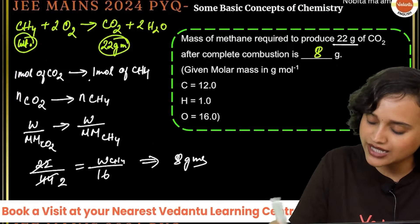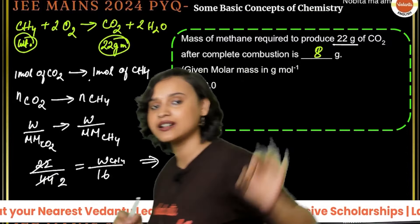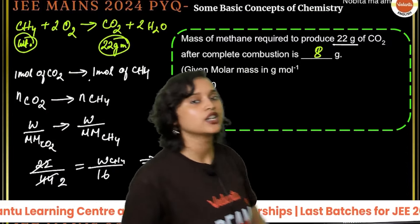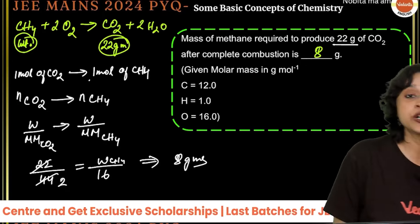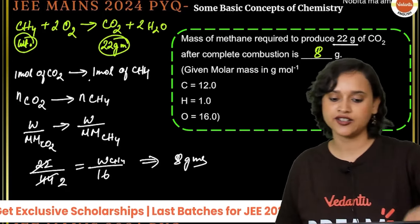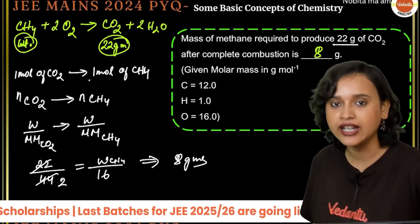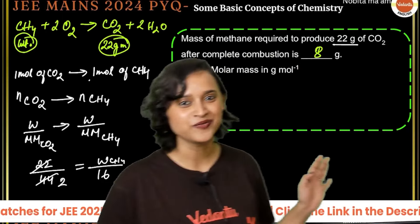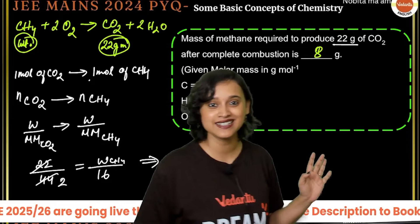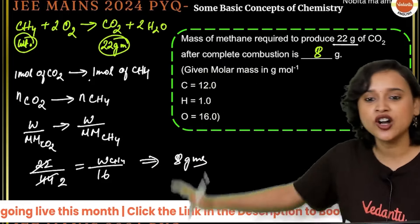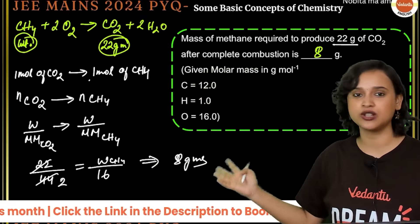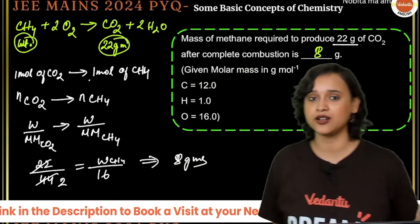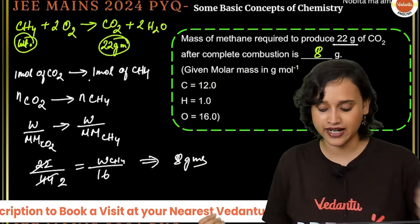8 grams is your answer. After complete combustion, you require 8 grams of CH₄ to produce 22 grams of CO₂. Again, a very easy question — you don't even require a calculator to solve this type of question.